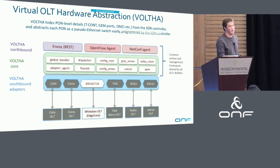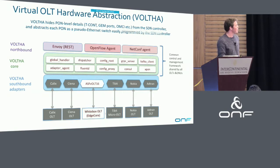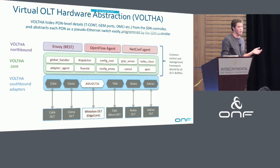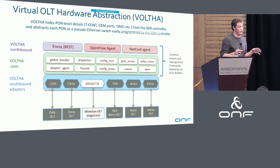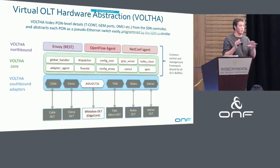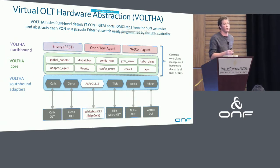At the top, VOLTHA provides a bunch of different kinds of interfaces. It has REST and NetConf for configuration, and then it has an OpenFlow agent for SDN control. The SDN controller can program VOLTHA using flow rules — matching on particular fields and then performing particular actions. Underneath, VOLTHA can take those flow rules and split them into configuration for different parts of the PON.